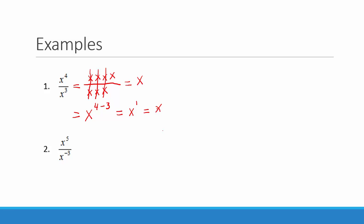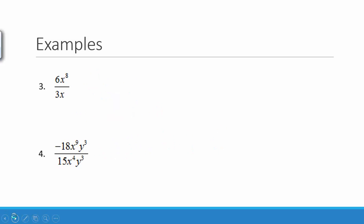In our next example, we subtract the top exponent minus the bottom exponent: 5 minus negative 3. Using our rules for adding integers, we change subtraction to adding the opposite: 5 plus 3 equals 8. In the following example, we look at the coefficients as a fraction: 6 over 3 equals 2. The x in the denominator has an exponent of 1, so we subtract 8 minus 1 to get 7. Our answer is 2x to the 7th.